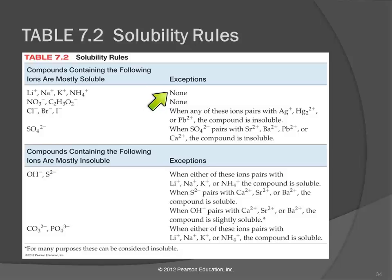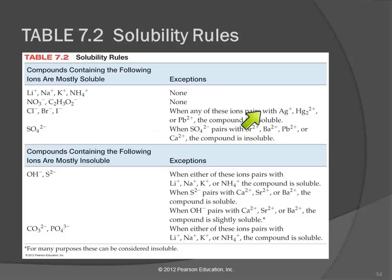Nitrate ion and acetate ion — if these are in the compound, it's soluble, with no exceptions. Chloride, bromide, and iodide compounds are mostly soluble, except when the cation is silver ion, mercury(I) ion (Hg₂²⁺), or lead(2+). If you have one of those three cations paired with one of those three anions, it's insoluble. Silver chloride, for example, does not dissolve in water — silver paired with chloride is insoluble.